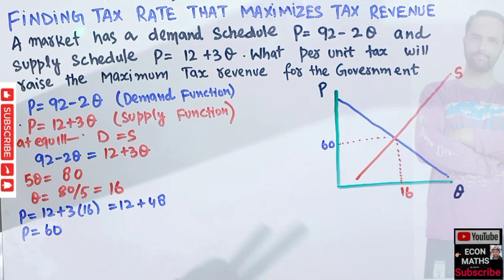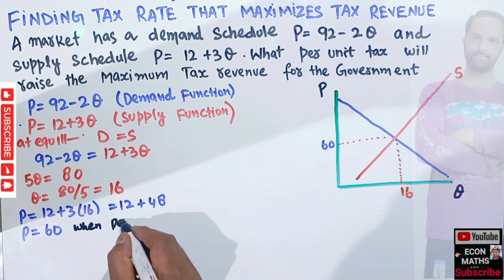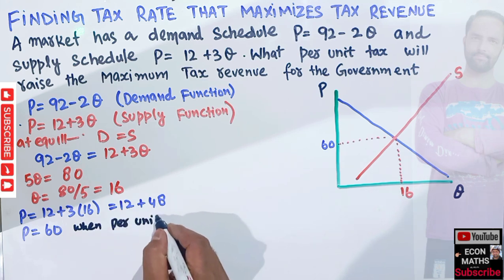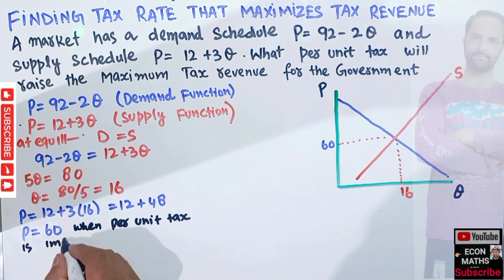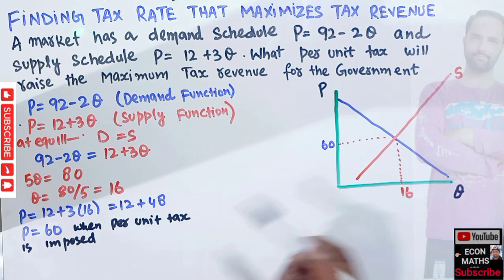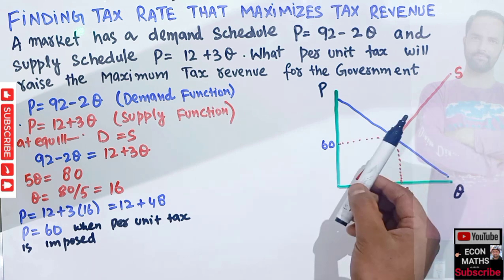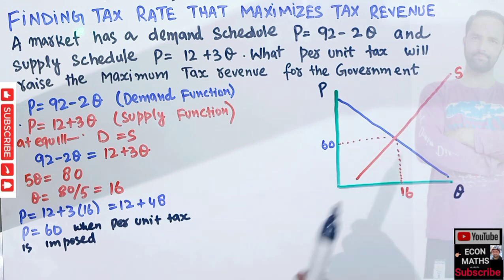When a per-unit tax is imposed, our marginal cost will increase, which means the supply function will shift to the left — we will be supplying less quantity.